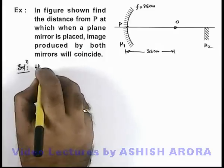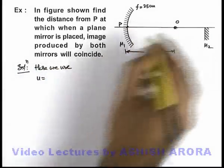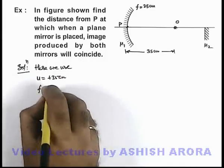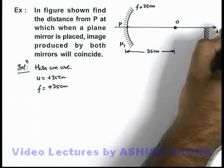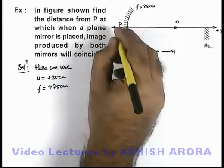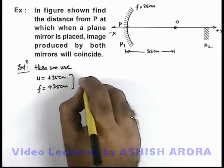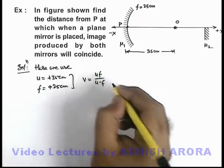Directly we can write: we use object distance from the pole of mirror is plus 35 centimeters and its focal length is plus 25 centimeters. Here I am taking right side as plus x-axis and left side as minus x-axis. So using this, by mirror formula I can write that image distance is given as u f by u minus f.